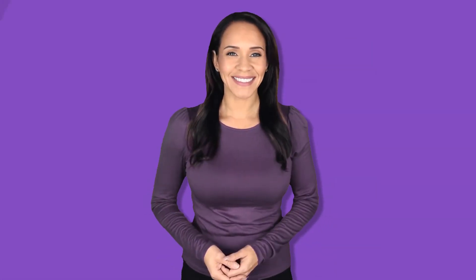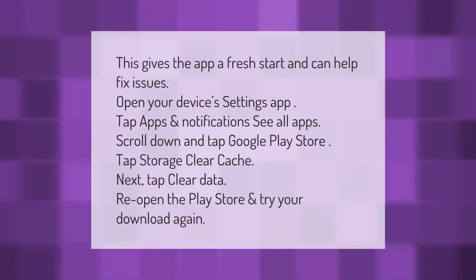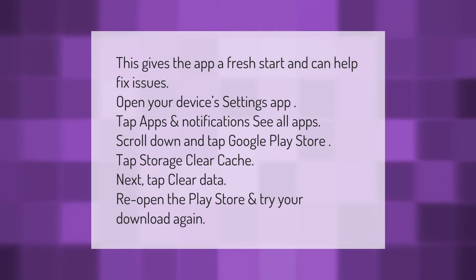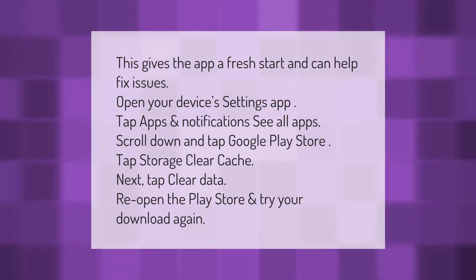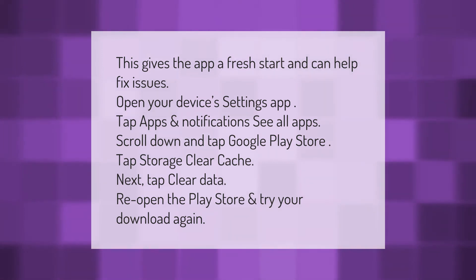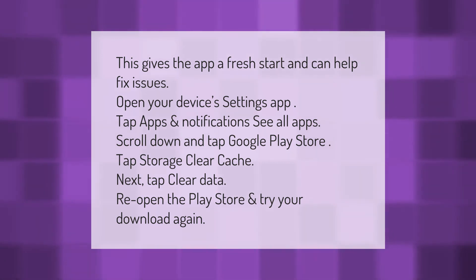This gives the app a fresh start and can help fix issues. Open your device's Settings app, tap Apps and Notifications, see All Apps, scroll down and tap Google Play Store, tap Storage, then Clear Cache. Next, tap Clear Data, reopen the Play Store, and try your download again.